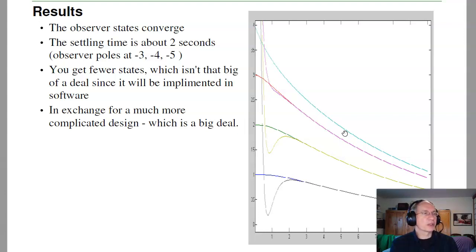The advantage of a reduced order observer is you have fewer states. I only have to build a third order system. That's actually not a very big deal since this is usually implemented in software. And implementing three states isn't that much easier than implementing four states. However, in exchange for having a slightly simpler implementation on the third order versus fourth order, I have a much more complicated design. And that's a big deal. Full order observers are pretty easy to understand. The reduced order observer is pretty convoluted.